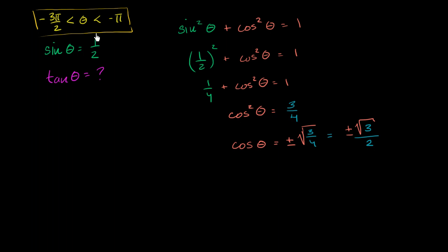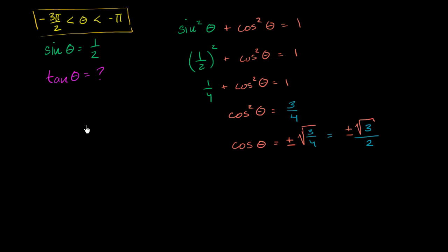Let's draw our unit circle. If you're wondering why we care about cosine of theta — if you know sine of theta and cosine of theta, then tangent of theta is just sine of theta over cosine of theta, and you'll have the tangent. But let's use the unit circle to figure out which value of cosine we should use. Let me draw it.